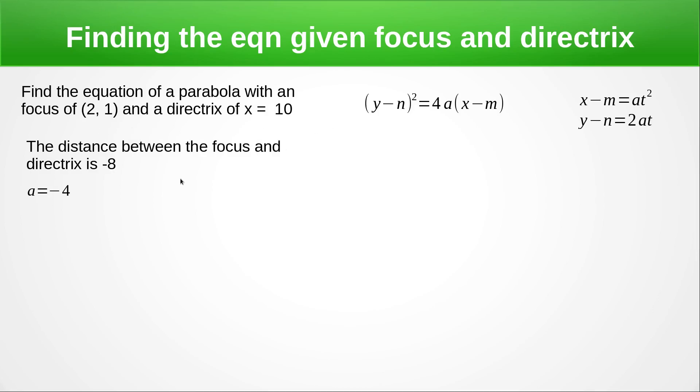this is going to be the average of 2 and 10, so that's going to be 6. So that's going to give us m equals 6 and n equals 1.